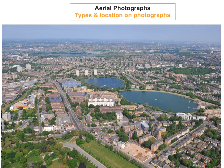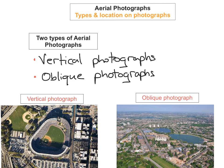So there we have it — we've looked at the two different types of photographs: vertical and oblique. The vertical has no horizon and you look straight down on the roofs in a bird's eye view, so you cannot see the sides of buildings. The oblique photograph shows the horizon and you can see the sides of buildings because you're looking at an angle.